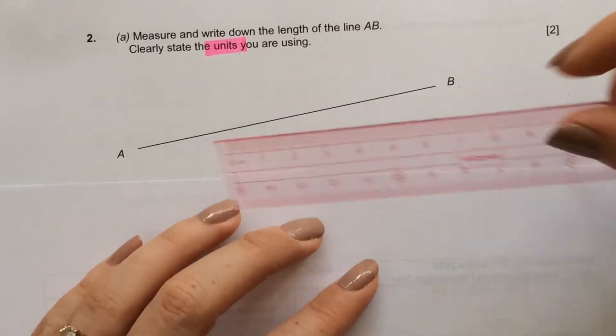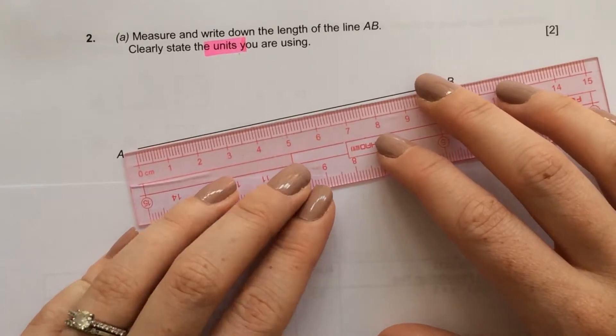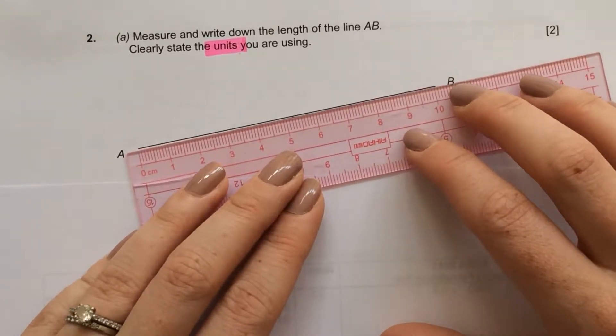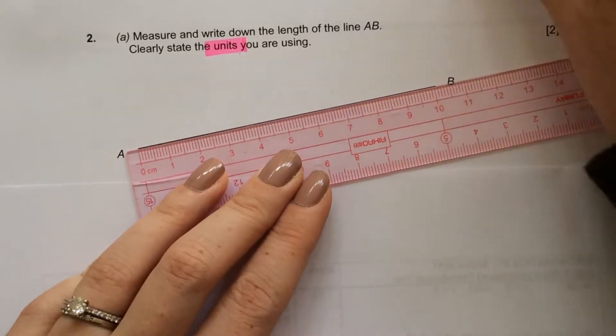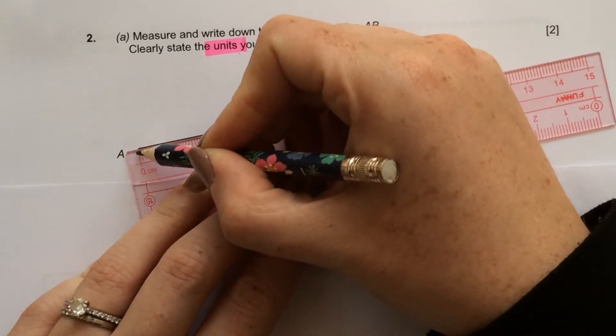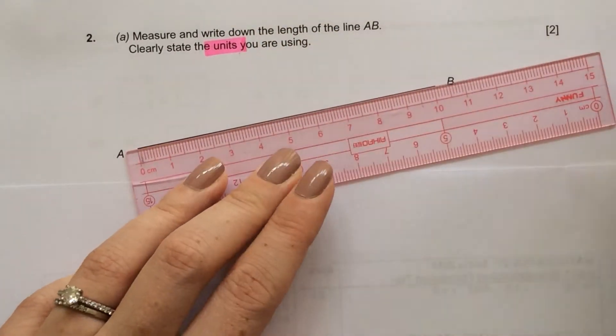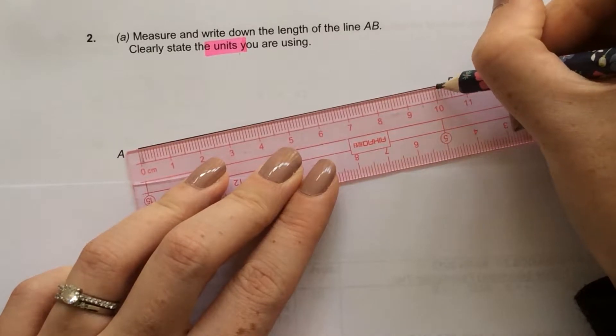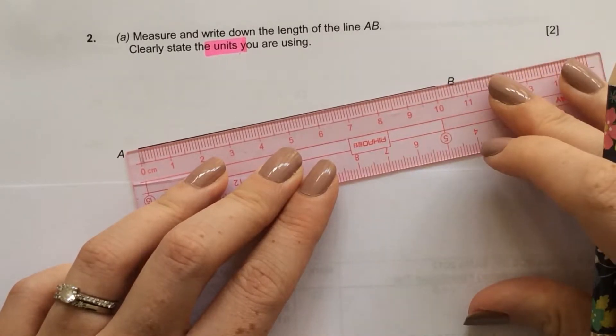So I need my ruler here, and I'm going to place my ruler so that the line starts at 0. Here, and then I need to measure where it ends. So here,